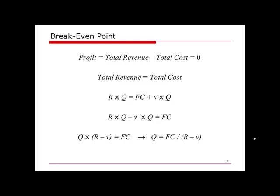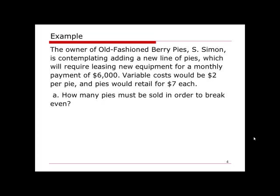The first example: the owner of Old-Fashioned Berry Pies, Simon, is contemplating adding a new line of pie, which will require leasing new equipment for a monthly payment of six thousand dollars. The variable cost will be two dollars per pie, and the pie can be sold for seven dollars each. The first question asks how many pies must be sold in order to break even.